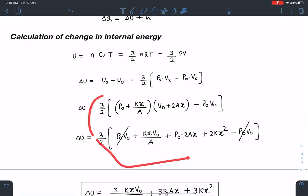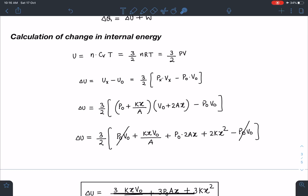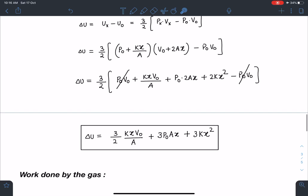When I'm going to substitute these values in this equation and simplify, many terms are going to get cancelled. So I'm not explaining this calculation part, but I hope you can easily do that. Though not many people can think about this step, that's my feel of this problem. So if you have tried it without seeing the solution, just let me know in the comment section if you could crack this part here. So when we simplify this, I am going to get this delta U as 3 by 2 Kx V0 by A plus 3 P0 Ax plus 3 Kx squared.